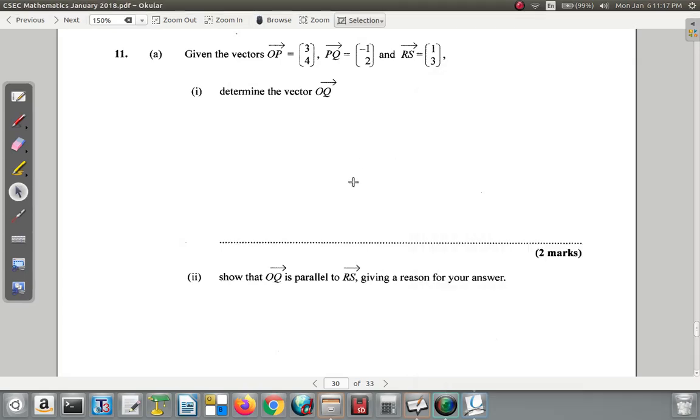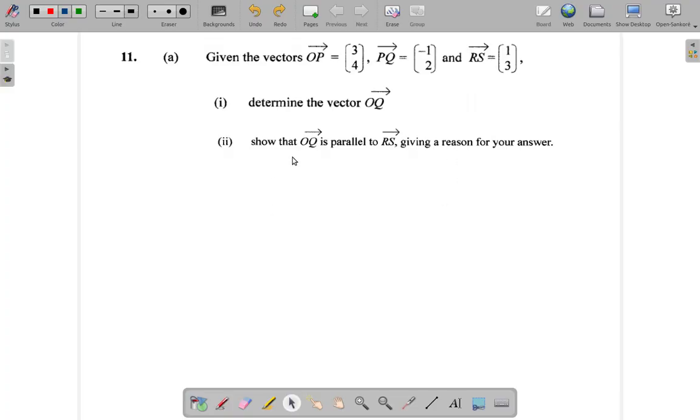CSEC Mathematics, January 2018. Let's look at question 11a. Let me copy. I've copied it here. It says given that vectors OP is (3, 4), PQ is (-1, 2), and RS is (1, 3).